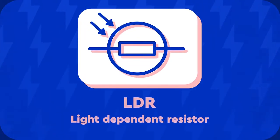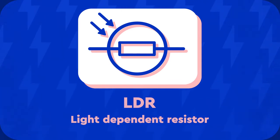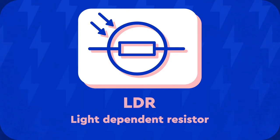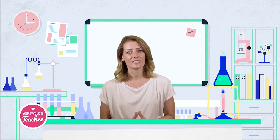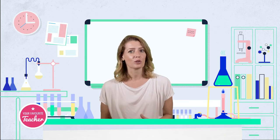An LDR, or light dependent resistor, is another special type of resistor. At high light intensities the resistance of the LDR is low. As the light intensity decreases, the resistance of the LDR increases. Light dependent resistors can be used to turn lights on automatically when it gets dark.